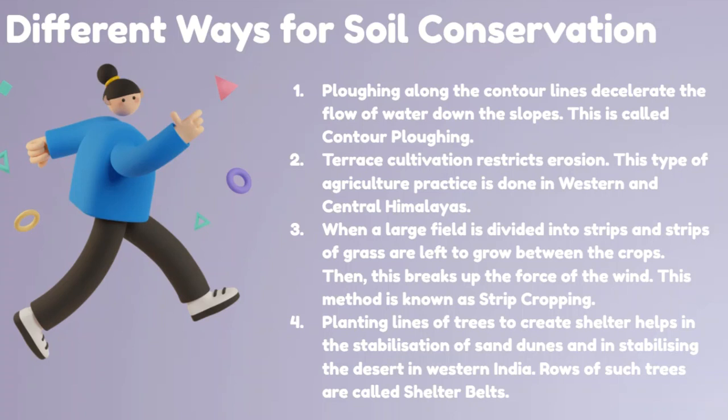Terrace cultivation also restricts erosion. This type of agricultural practice is done in the Western and Central Himalayas. Terrace cultivation means step-by-step planting with plants and grasses, so water flows slowly and soil does not wash down the slope.